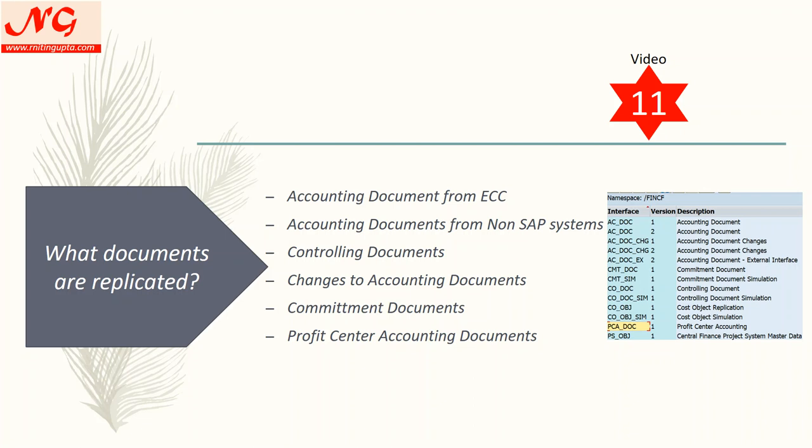On the screen you can see the namespace objects under FIN_CF, including: accounting document, accounting document changes, external interface for non-SAP systems (AC_DOC_EX), commitment cost controlling document, cost object replication from the AUFK table, profit center, and master data. There is also a simulation feature — before making an actual posting, you can simulate to check for errors, resolve them, and then do the actual posting. It is optional but recommended.